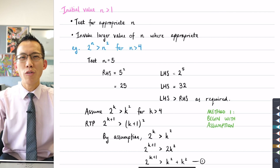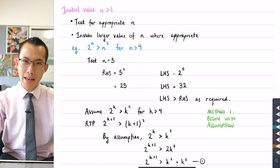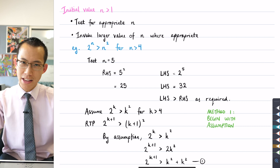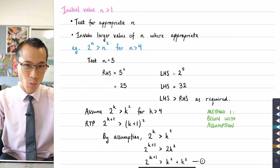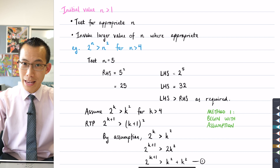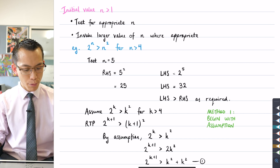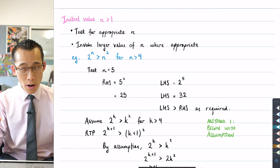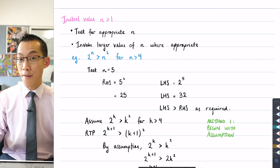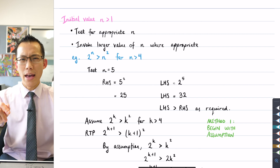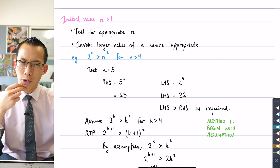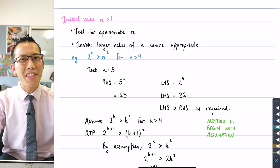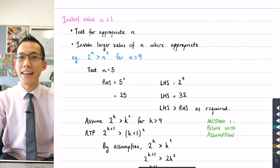Within Mathematics Extension 2, we've been looking at mathematical induction of harder varieties than in Extension 1. The first example today is when you have to prove for n equals, and instead of starting at 1, it might be — in this case — 5, 6, and then 7. That introduces extra complexities, especially when you throw in things like inequalities.